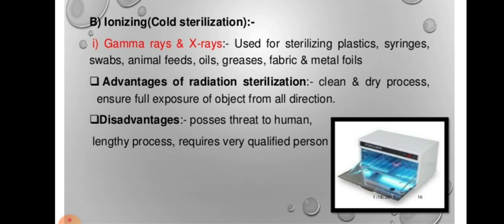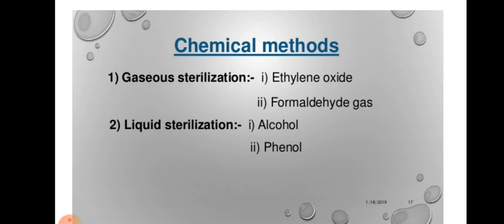Advantages of radiation sterilization: it is a clean and dry process that ensures full exposure of the object from all directions. Disadvantages: it poses a threat to humans, it is a lengthy process and requires very qualified persons. Moving on, after finishing physical methods of sterilization, we move to the second type known as chemical methods. Here we use two types of chemicals: gaseous chemicals and liquid chemicals. Gaseous sterilization uses two types of gases: ethylene oxide and formaldehyde gas. In liquid sterilization, we use alcohol and phenol.